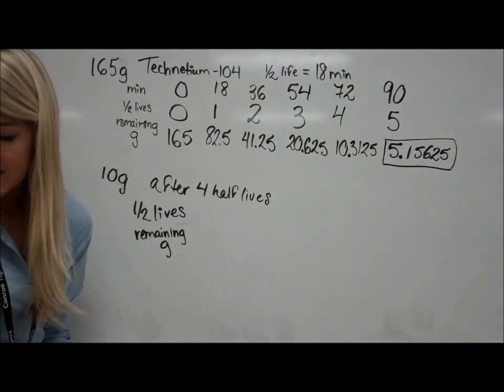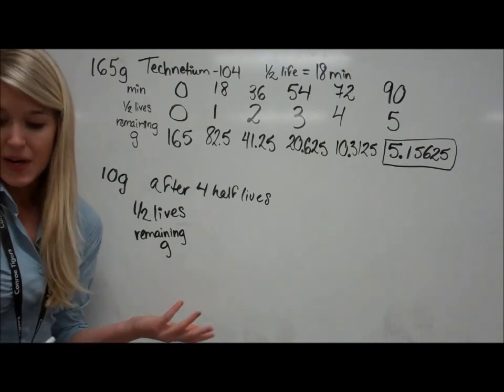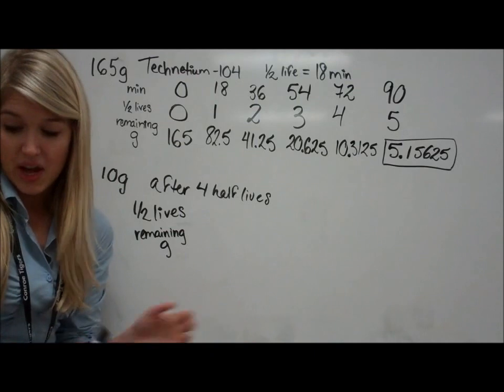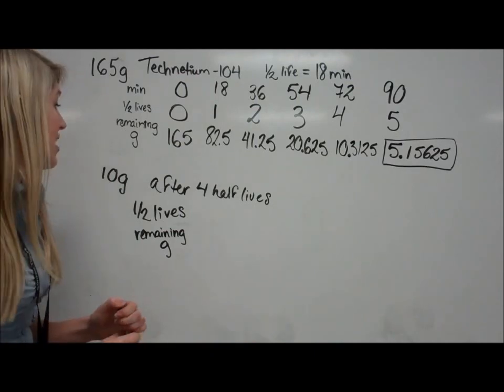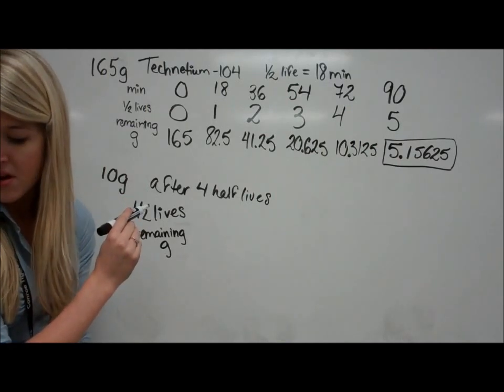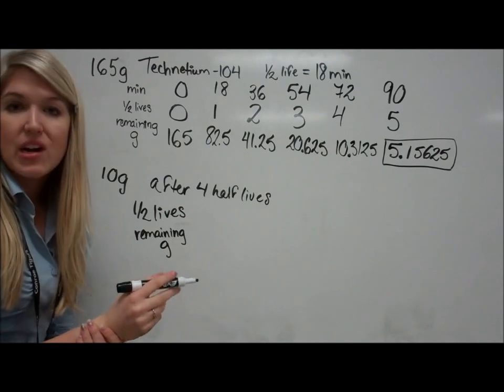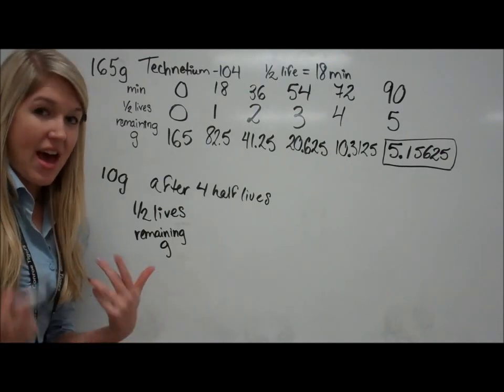On the second problem, it's asking us about a radioisotope. They don't say which one, but that's okay. It doesn't really matter. So it says we have 10 grams of it. It's going to go through four half-lives. And it says the half-lives are 2.75 years, but we really don't need to use that. And I'll show you why.